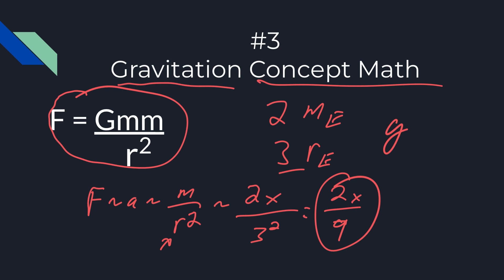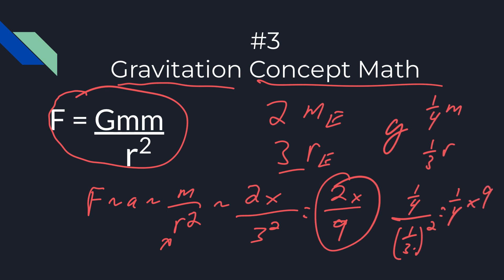One other example: if the planet is one-fourth the mass but one-third the radius, acceleration is proportional to (1/4) divided by (1/3) squared. The mass gives one-fourth as big, but the radius gives three squared, or nine times bigger. So the final answer would be nine-fourths of Earth's g. You can do this with any equation, and you should see several of these on the test.